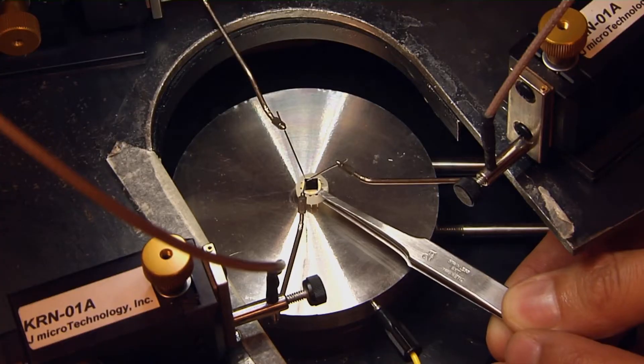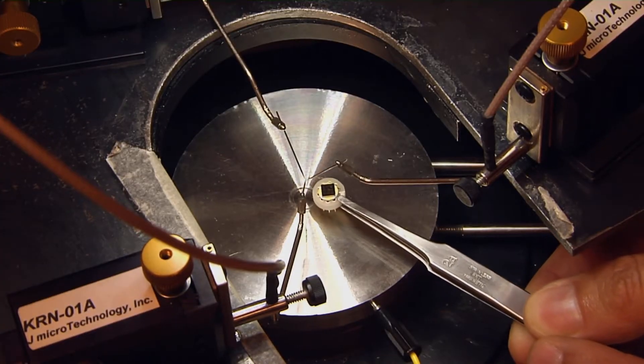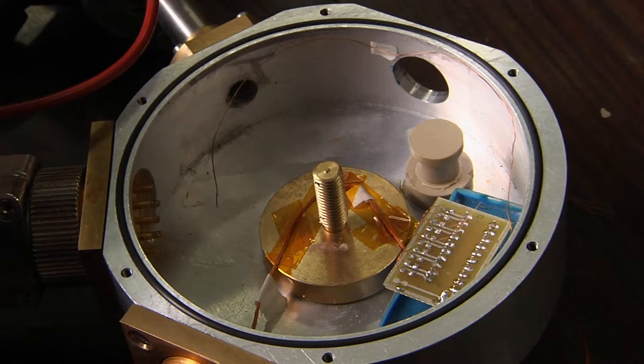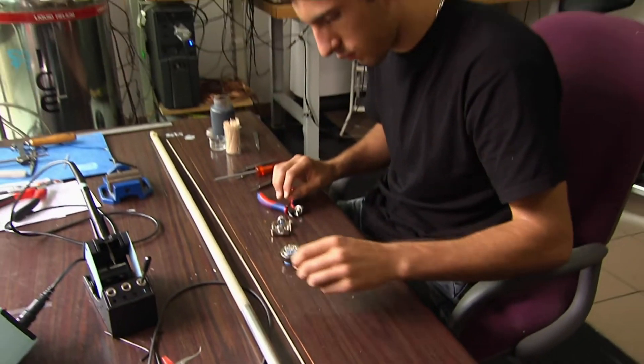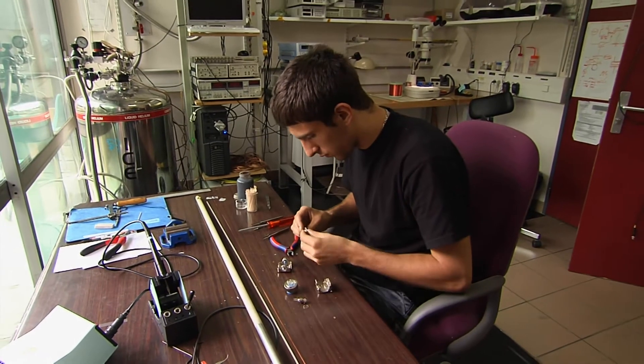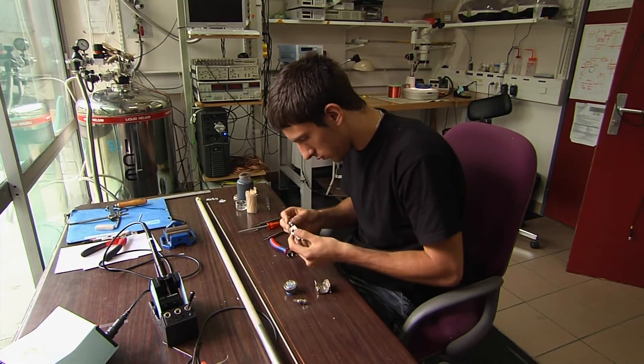We use a high magnetic field as a magnifying glass which helps us to understand properties of certain interesting materials. We take a sample and then we put it in something which we call a probe. This is usually a long stick which is equipped with different kinds of measuring tools.